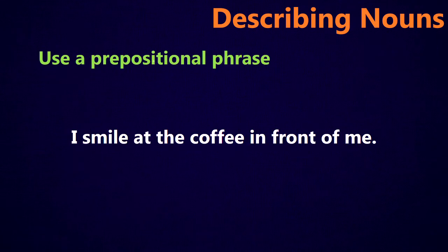You can also use a prepositional phrase to describe the noun, where it works like an adjective. For example: I smile at the coffee in front of me. In front of me is the prepositional phrase describing the coffee — which coffee? The cup that is right in front of me. So when you say this, the listener knows exactly where the coffee is. It's being more descriptive.